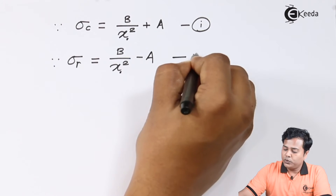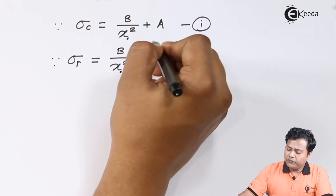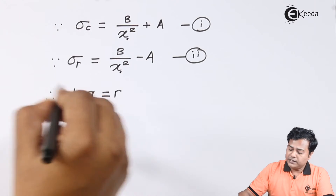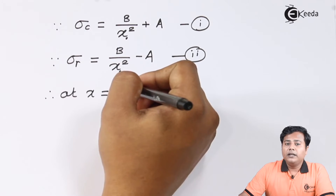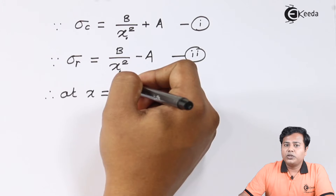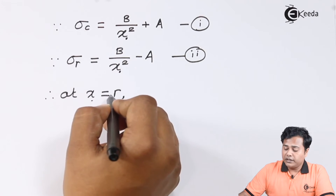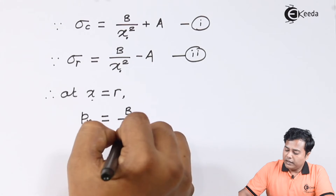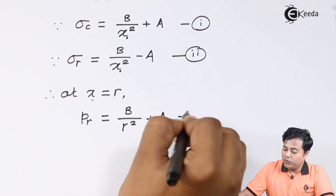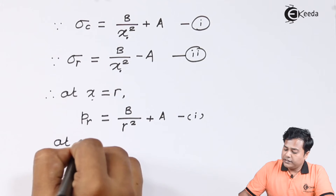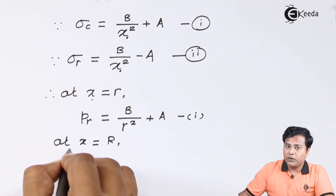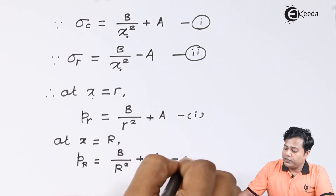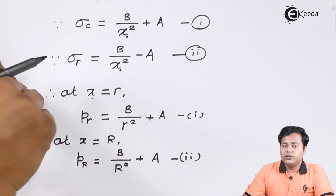At X equal to small r (inner radius), the pressure is given by B divided by r square plus A — equation one. At X equal to capital R (outer radius), the pressure is given by B divided by R square plus A — equation two.